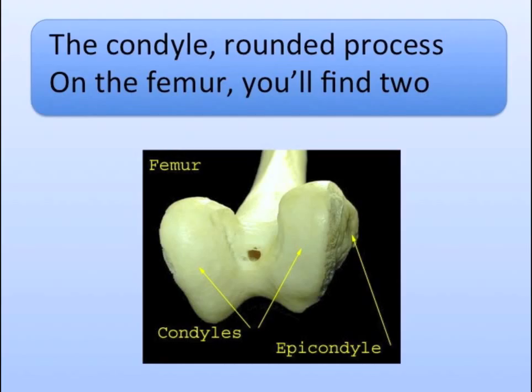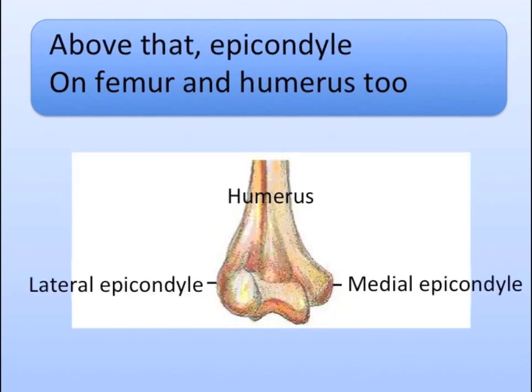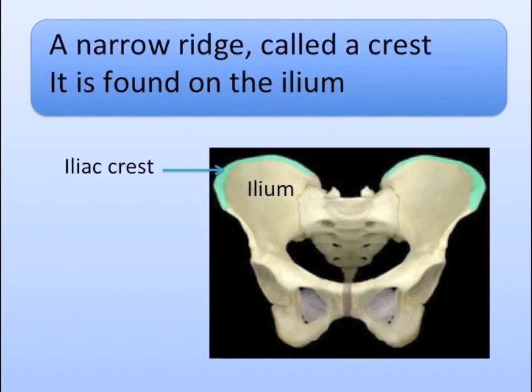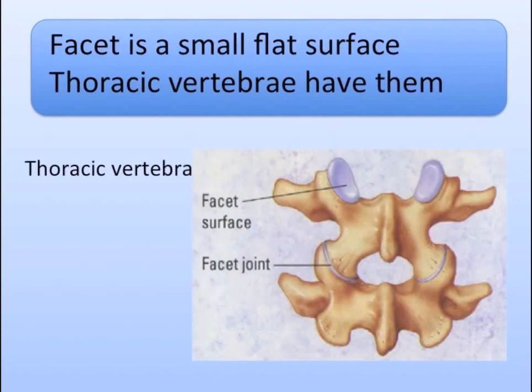The condyle — a rounded process on the femur — you'll find too. Above that, the epicondyle, on femur and humerus too. A narrow ridge called a crest is found on the ilia. A facet is a small flat surface; thoracic vertebrae have them.